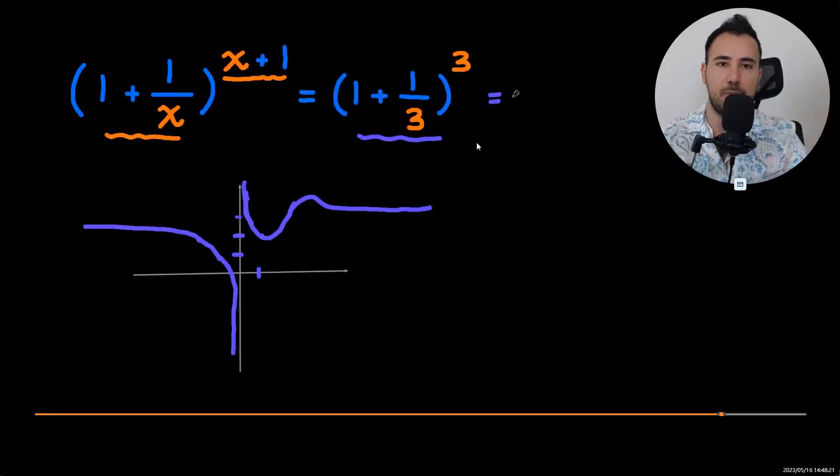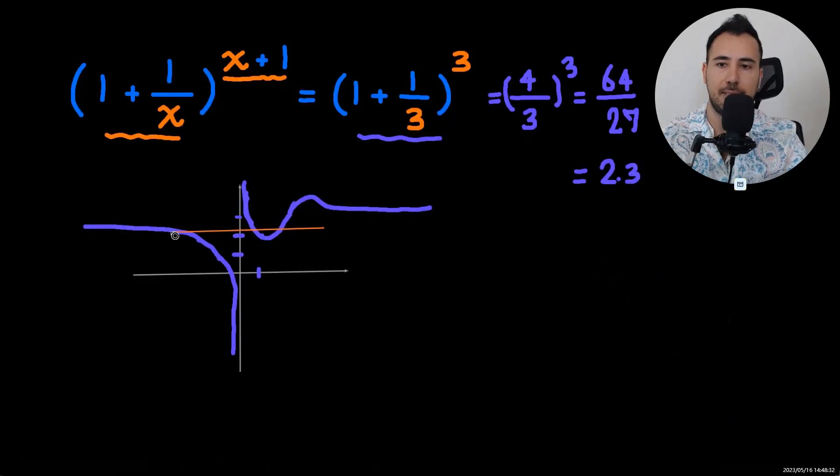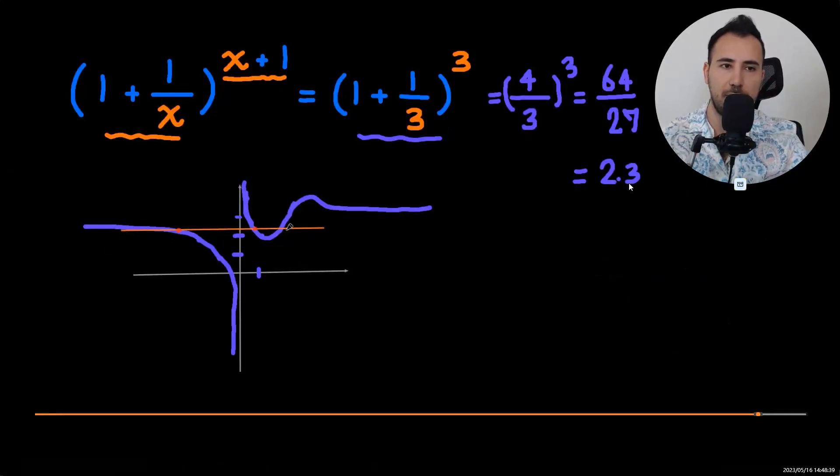And now we want to draw a line. To do that we need to simplify this to see the value of one plus one over three to the third power. So as you see, this line 2.3, well this is approximate by the way.